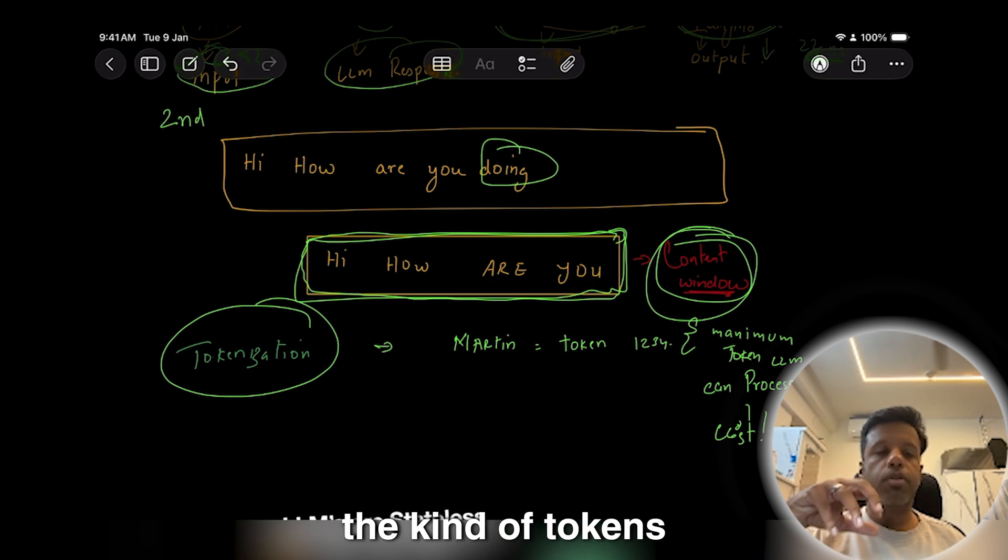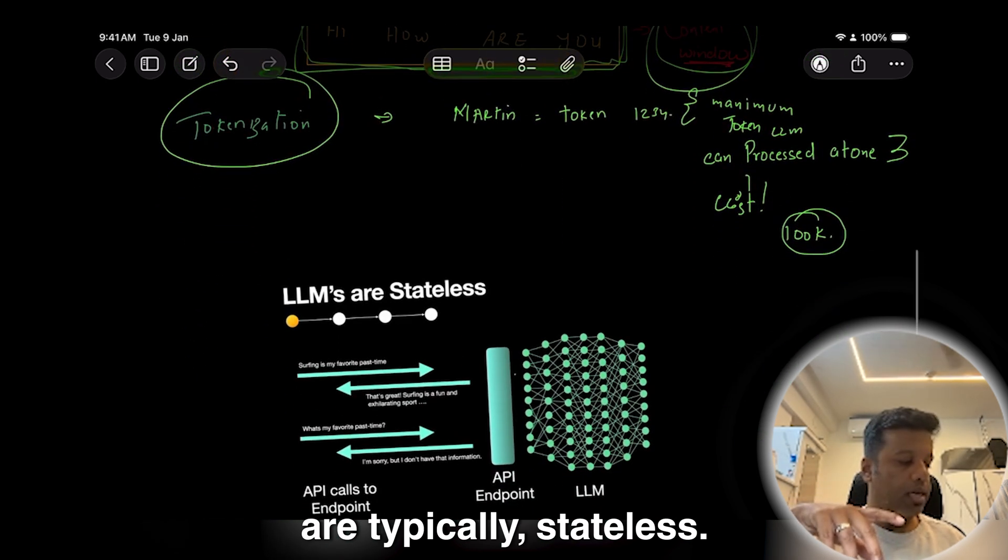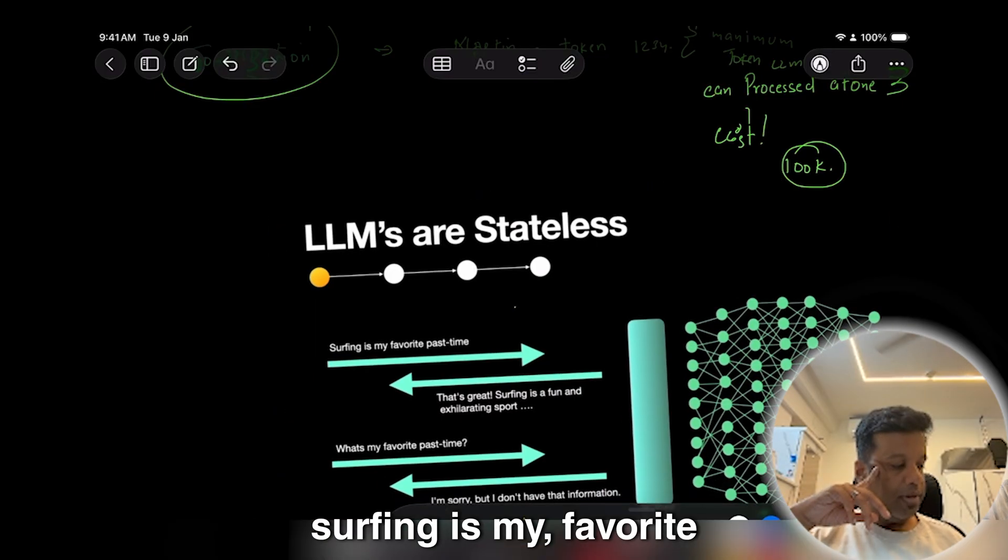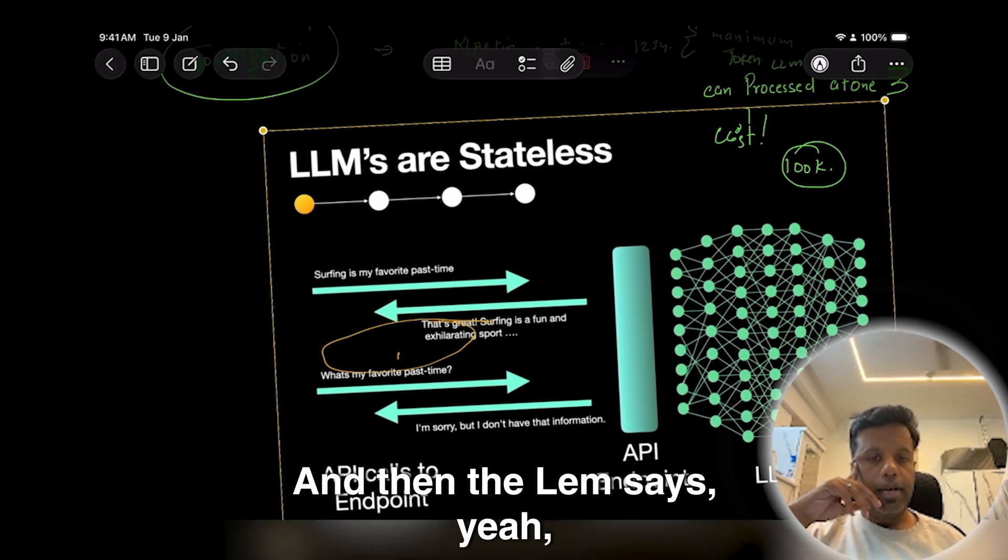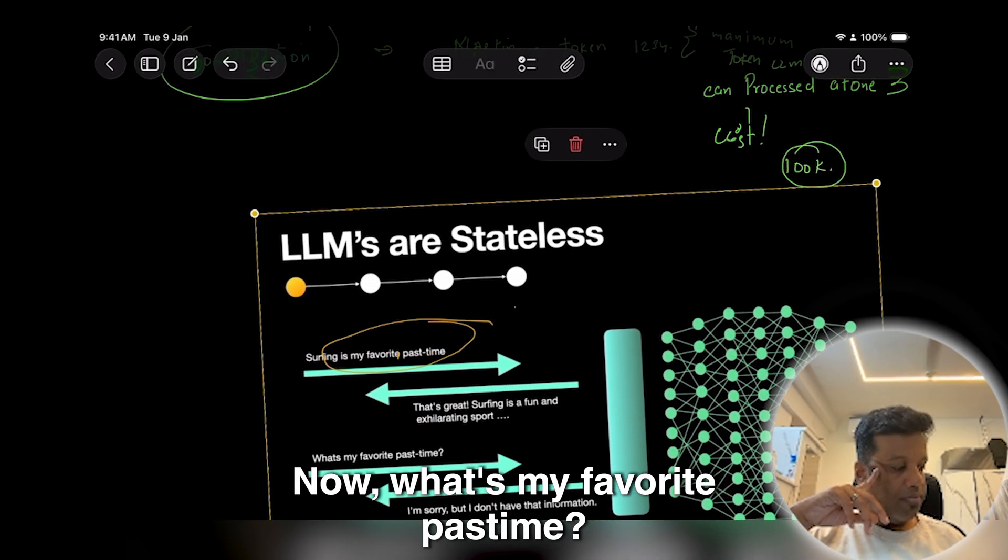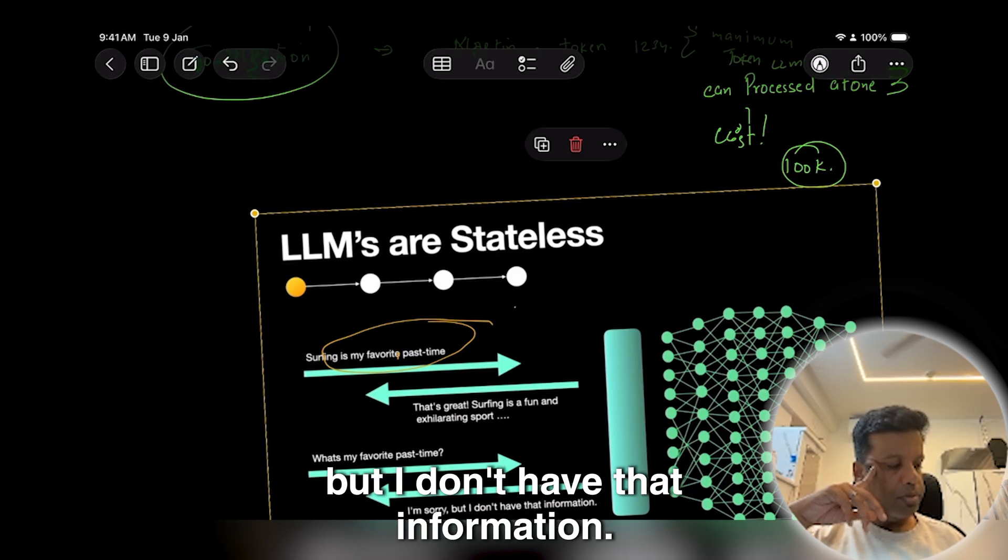It all depends upon the kind of tokens that you can process at any given point of time, because LLMs are typically stateless. So let's say you say 'surfing is my favorite pastime,' and then the LLM says 'yeah, that's great.' Now 'what's my favorite pastime?' Let's say you ask that and it says 'I'm sorry, but I don't have that information.'